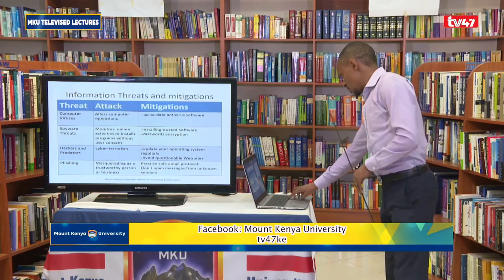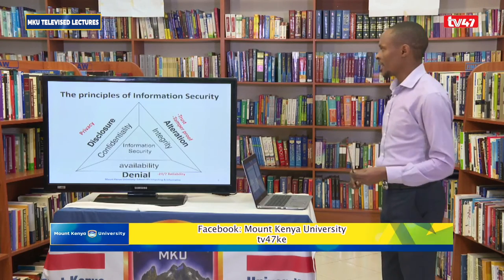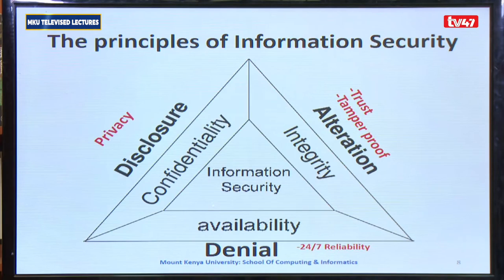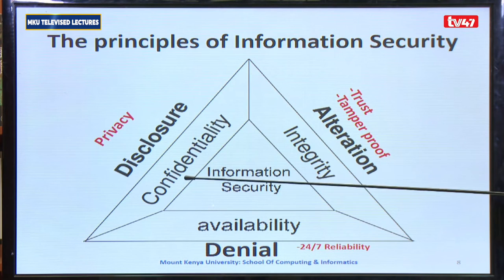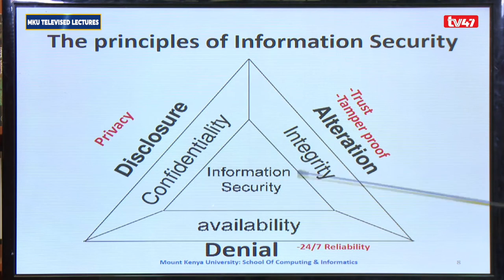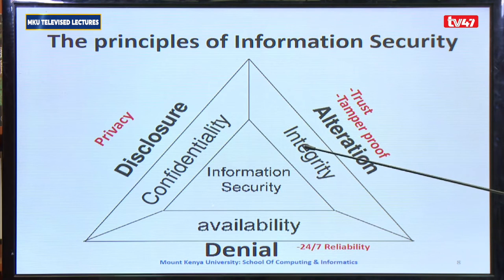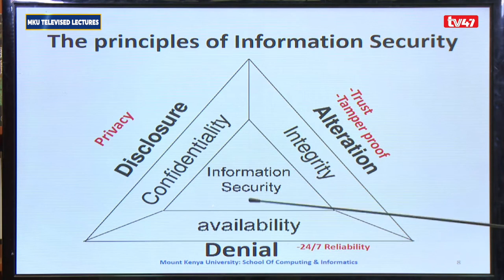Moving on to the principles of information security. Any information system is built on three principles, what we call the CIA triad, because it is composed of Confidentiality (C), Integrity (I) of a system, and Availability (A) of the system.